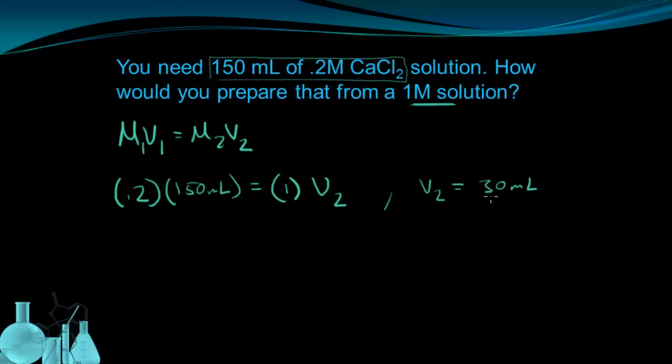So I would need to take 30 milliliters of the 1M solution and I would need to add the rest of the volume in water. So I would add 120 milliliters of water. That would bring me to a total volume of 150.